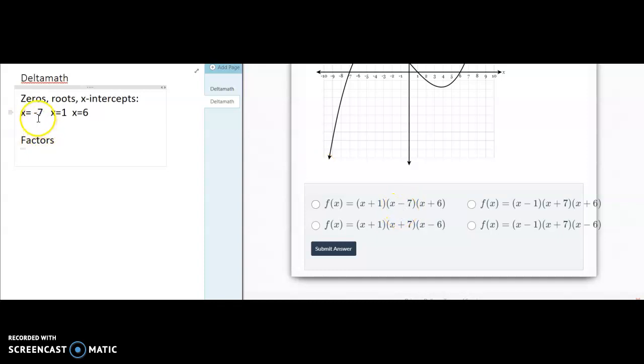But we want negative 7, so really our factor here is going to be x plus 7. Because subtracting the 7 will give me that negative 7 up there. If this is x equals 1, the factor has to be x minus 1 because when you add the 1, then it gives you x equals 1. And then x equals 6 would be x minus 6.